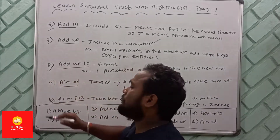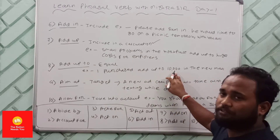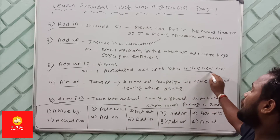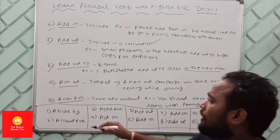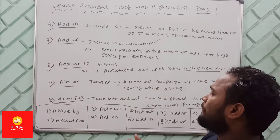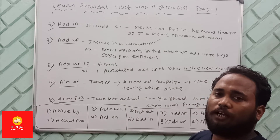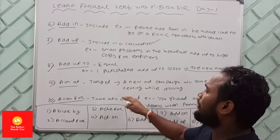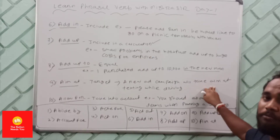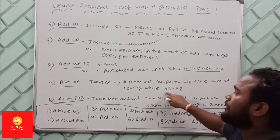Number eight: 'add up to' means to equal a total. For example: My purchases add up to 10,000 — the total I spent at the new mall. Number nine: 'aim at' means to target. For example: My channel aims at improving your English knowledge. A new ad campaign will aim at texting while driving.